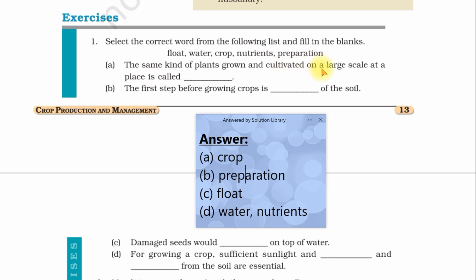First question: The same kind of plant grown and cultivated on a large scale at a place is called crop. Second question: The first step before growing crop is preparation of the soil. Damaged seeds would float on top of water. For growing a crop, sufficient sunlight and water and nutrients from the soil are essential.